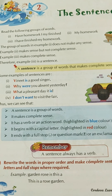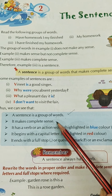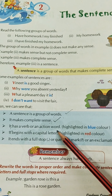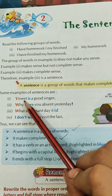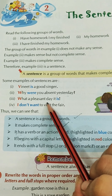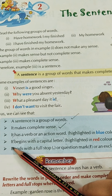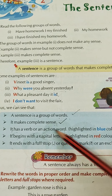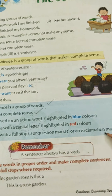Dear students, now we are going to move forward in the chapter. A sentence is a group of words that should make complete sense and has a verb or action word. Verbs are doing words or action words. In the examples shown in blue — 'Vineet is a good singer,' 'Why were you absent yesterday?', 'What a pleasant day it is!' — these highlighted words are the verbs. A sentence must always begin with a capital letter and end with a full stop, question mark, or exclamation mark.